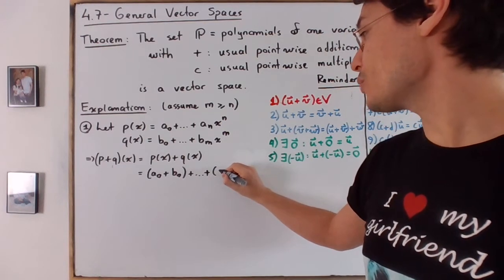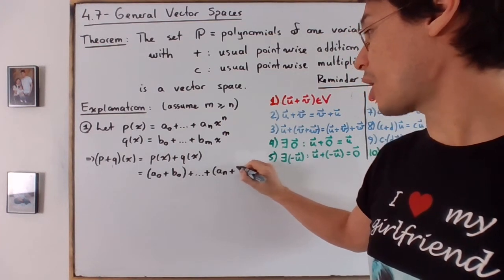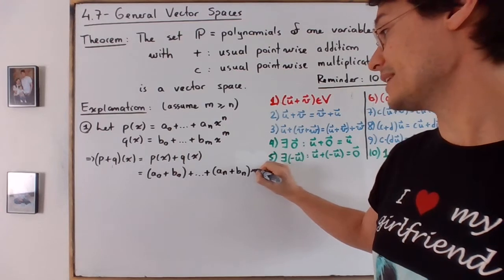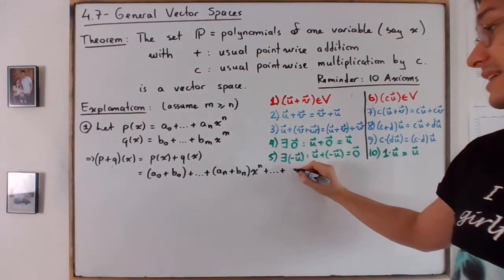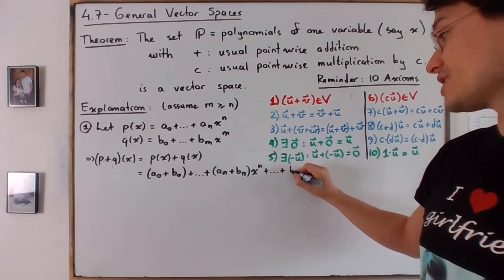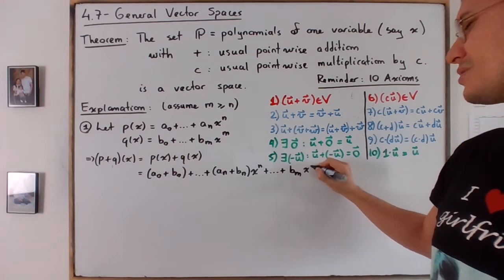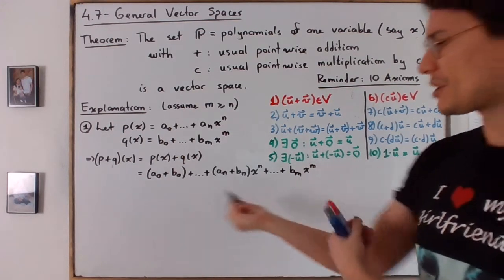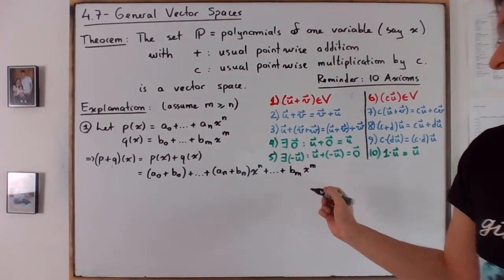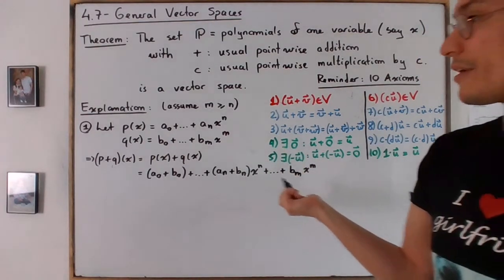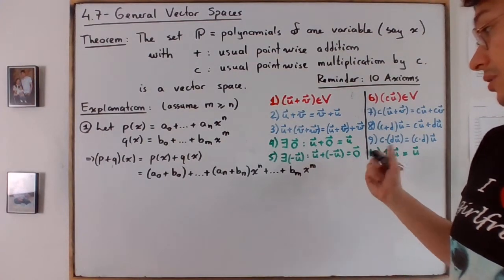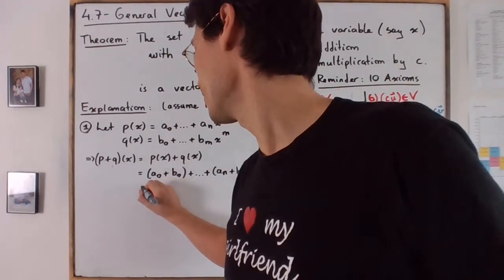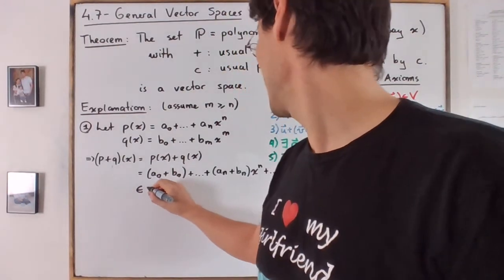So basically, what you're doing is you're adding up all the coefficients, right, x to the power of n plus, and then you continue like this, until you have just b m x to the power of n. So this is the one for p plus q of x. And as you can see, it is a polynomial.